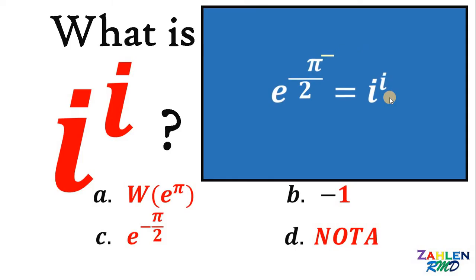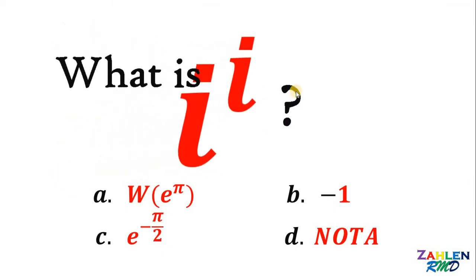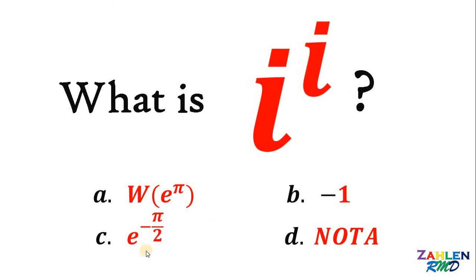Thus, i raised to i is equal to e raised to negative π over 2. Therefore, the value of i raised to i is letter c, e raised to negative π over 2. And we are done.